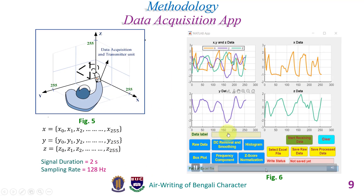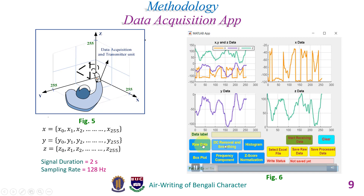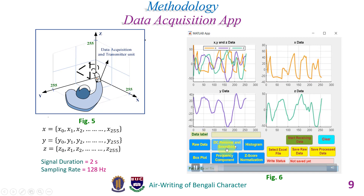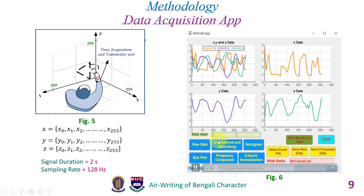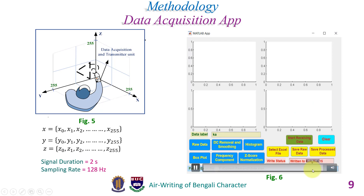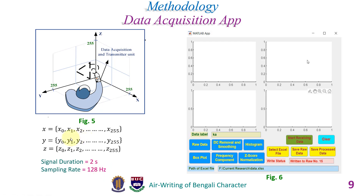We have developed an app to receive data from the receiver circuit. This app has options to show raw data and some pre-processed data graphically. The app also has an option to label the data and save it to an Excel file. This app helped us prepare the dataset. The duration of each air writing sample is 2 seconds with a sampling rate of 128 Hz, so for each air writing character we get three sets of data, each with 256 samples.